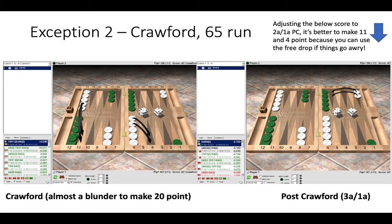But if we were to change the post-Crawford score from 3 away, 1 away to 2 away, 1 away, then it would be correct to make the 11 and the 4 point. And that's because we have a free drop if things go badly. So on the position on the right, at 3 away, 1 away, we have a free take at that score. So we really want the long-term asset so we don't get gammoned and lose the match.